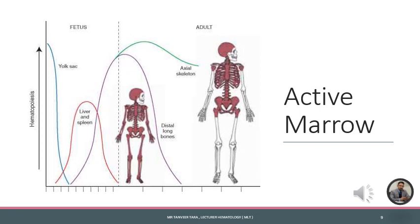After birth, all bone marrow becomes active and is called red marrow. We have two types of marrow: red marrow, which is responsible for hematopoiesis and is called active marrow; and yellow marrow, which consists of adipose tissue. Yellow marrow has the ability to switch back to red marrow during critical conditions. As age increases, red bone marrow remains active in membranous bones like the sternum and skull.